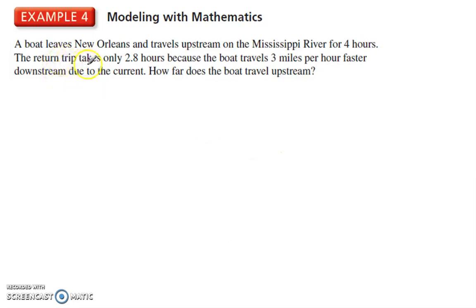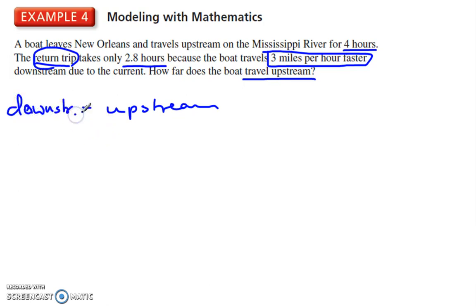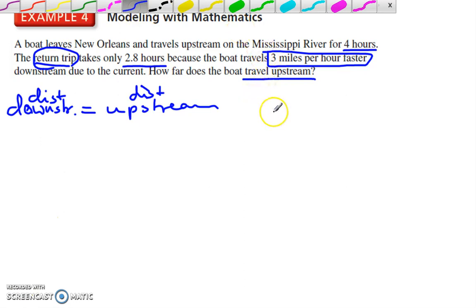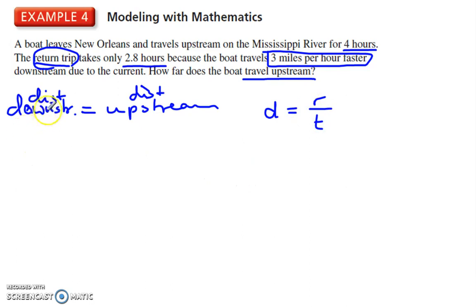One last example here. This one's a little tricky. Here we have a boat leaving New Orleans traveling upstream on the Mississippi River for 4 hours. The return trip, so we're going back to where we started, is only 2.8 hours because it traveled 3 miles per hour faster due to the current. How far does the boat travel upstream? First let's establish that this is a return trip, a round trip. So upstream is equal to downstream. So the distance traveled here is equal to the distance there. Now we are going to use the formula distance equals rate times time.